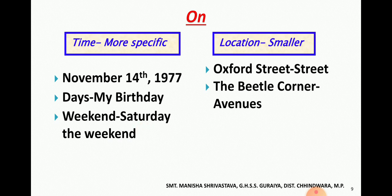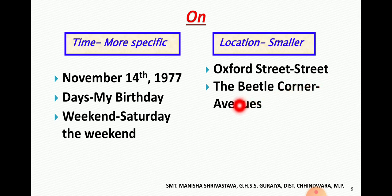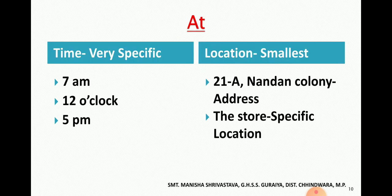Location के sense में 'on' जब use करते हैं तो smaller sense में आता है — जैसे 'on Oxford Street' — गली की बात हो रही है, 'on the beetle corner' — उस particular point पर. तो 'on' का use smaller location की sense में, streets और corners के लिए किया जाता है.